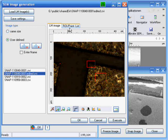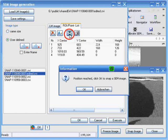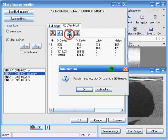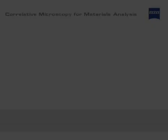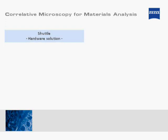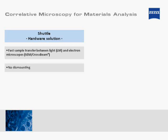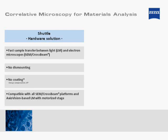Finally, the images from the light and electron microscopes can be overlaid or even mixed via EDS mapping as required. It's fast, it's easy, and it's safe. Shuttle enables fast and reliable sample transfer from a light to a scanning electron microscope — no dismounting, no additional coating necessary — but still fully compatible with all SEM, cross-beam platforms, and AxioVision-based light microscopes featuring a motorized stage. Find permits the instant and reliable recall of regions of interest, providing access to the complete functionality of Carl Zeiss light and scanning electron microscopes.